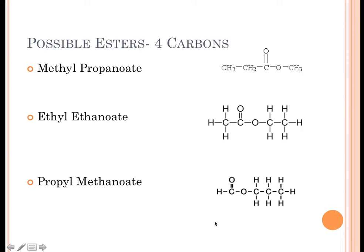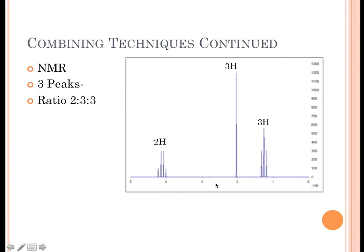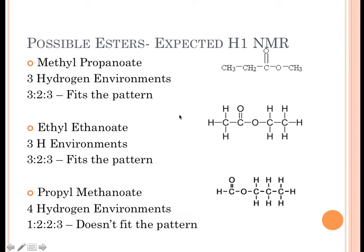Now I need my NMR to tell me which one. So if I look at it, I've got three peaks in a ratio of 2 to 3 to 2. This one—3, 2, 3—fits the pattern, that's all good. This one—3, 2, 3—fits the pattern, that's good. This one—1, 2, 2, 3—doesn't fit the pattern. We can knock out propylmethanoate. Down to two. Gonna look at some high-res now.